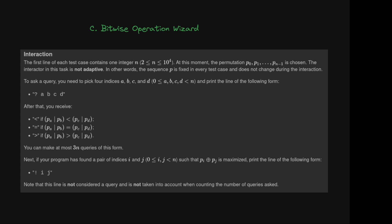To ask a query, you need to pick four indexes a, b, c, and d and print the line with a question mark followed by all four indexes. You receive a less-than sign if bitwise OR of p[a] and p[b] is less than p[c] and p[d], an equal sign if both ORs are equal, and a greater-than sign otherwise. You can make at most 3n queries. Once you find a pair i and j such that p[i] OR p[j] is maximized, print an exclamation mark followed by i and j. This line is not counted as a query.